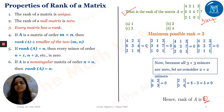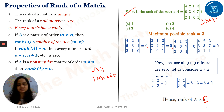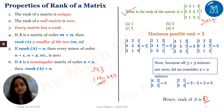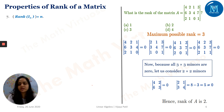If A is a non-singular matrix of order n×n, then rank of A equals n. By definition, if the determinant of A is non-zero — for example, suppose det(A) = 4 for a 3×3 matrix — then the highest order non-zero determinant is of order n, so rank of A = n. Also, the rank of the identity matrix I_n equals n.